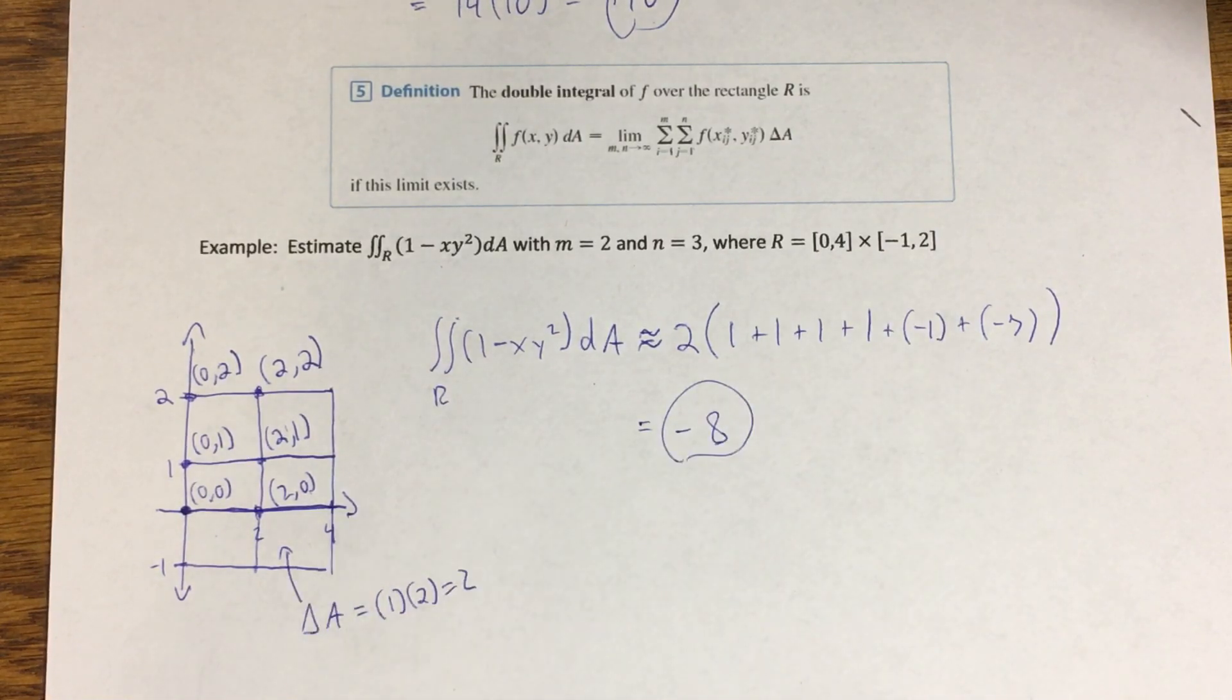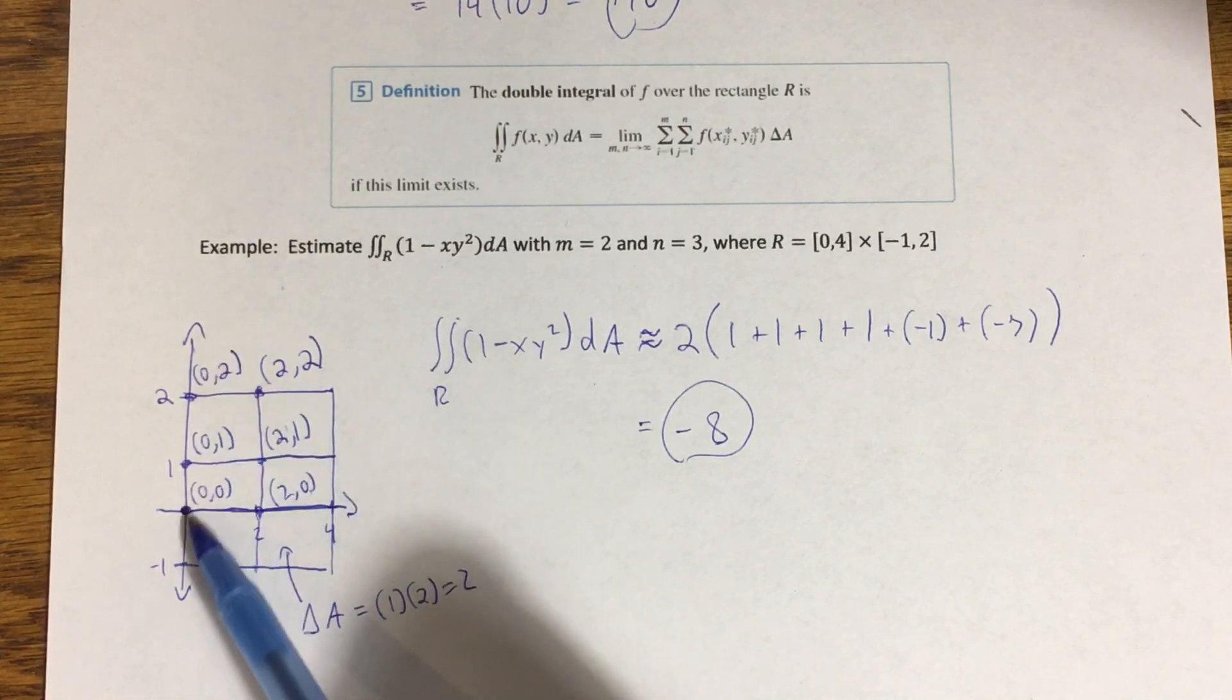So if I wanted to approximate this, remember we're thinking of this as the volume under the surface over this rectangle, which we define here. The x-axis we're going to use the interval zero to four, and on the y-axis we're going to use the interval negative one to two.